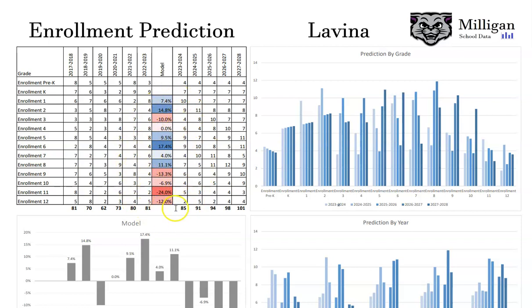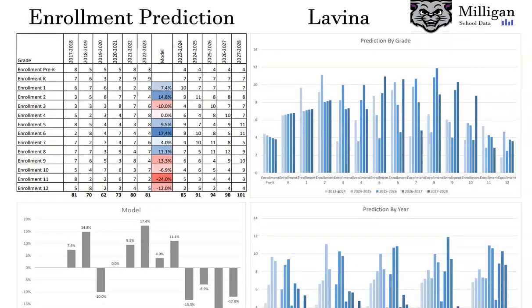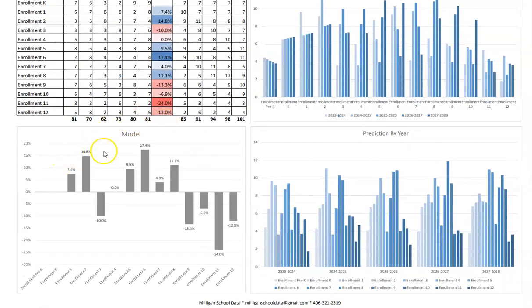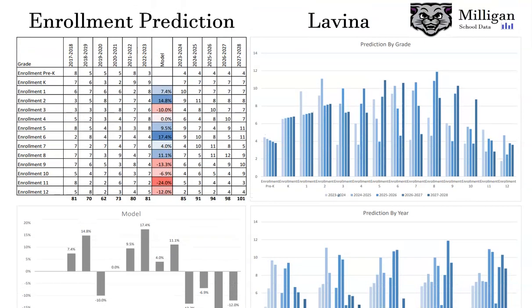That builds the predictive model for this particular school. If I scroll down here, you can see this graph is just showing visually what that predictive model is. What you can see in this particular school is that they tend to gain students throughout elementary and middle school, and then students transfer out really throughout high school.